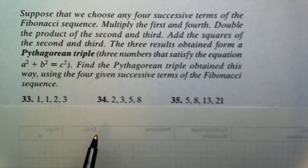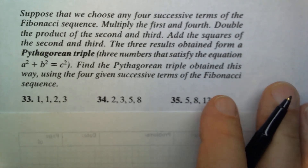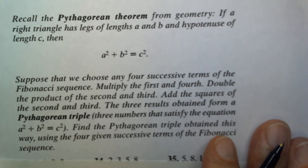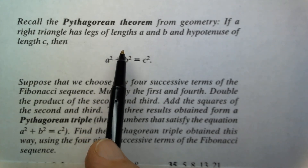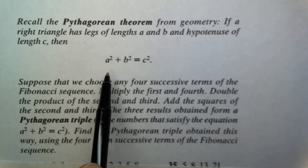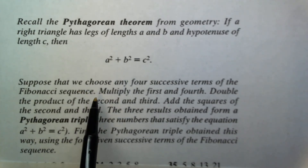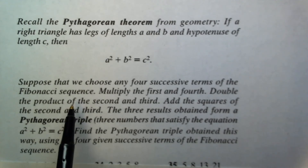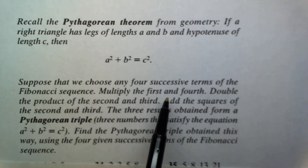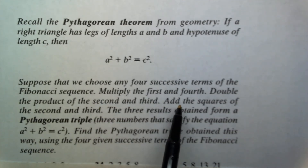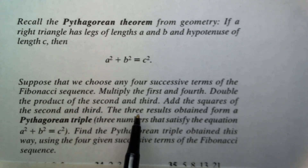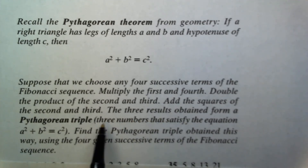The next few exercises show the connection between the Pythagorean theorem and the Fibonacci numbers. In the Pythagorean theorem from geometry, a right triangle has legs of length a and b and a hypotenuse of length c, so a squared plus b squared equals c squared. Here's a connection to the Fibonacci sequence: choose any four successive terms, then multiply the first and fourth term, double the product of the second and third, and add the squares of the second and third. The three results form a Pythagorean triple.